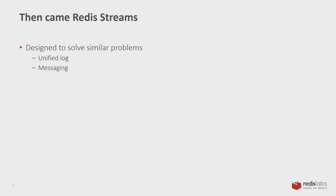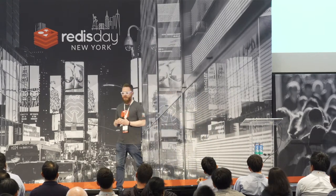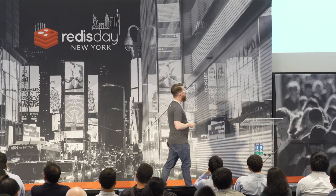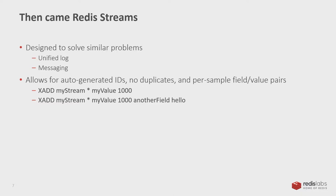Redis Streams came out a couple of years ago and was designed to solve similar problems — a unified log in your application architecture where different services contribute to it, you write to a log constantly, and consumer groups read off those logs. But it's similar and not quite the same as a traditional time series problem. With XADD you can auto-generate timestamps and add field-value pairs, but you couldn't really do the hourly aggregations and something called downsampling that we'll talk about in just a second.